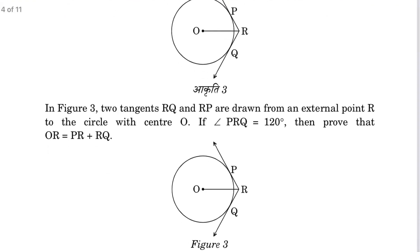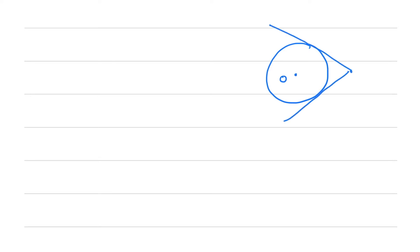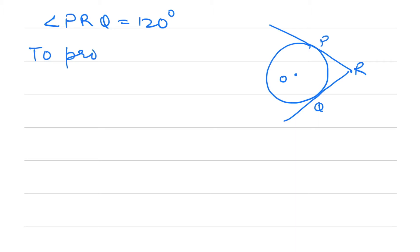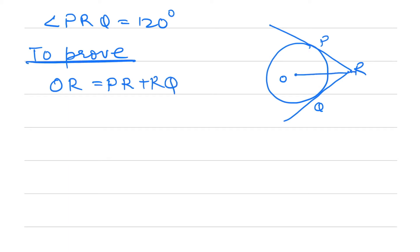Question number 5: we are given a circle with center O, an external point R, and two tangents drawn — RP and RQ. Angle PRQ is given as 120 degrees, and we have to prove that OR is equal to PR plus RQ.